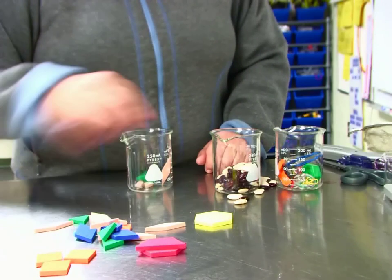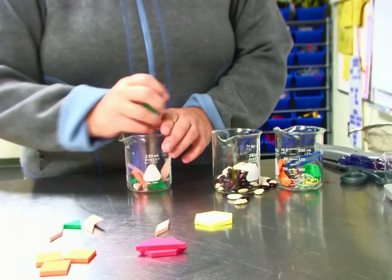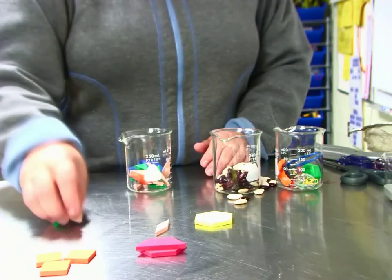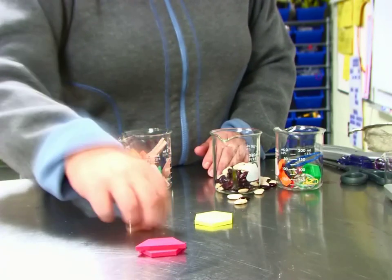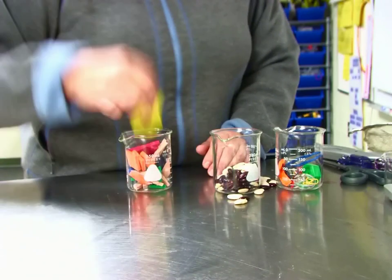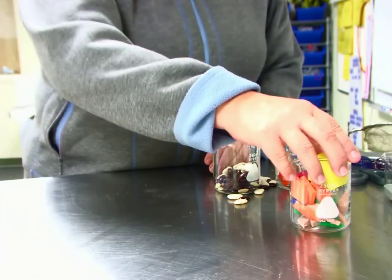So those are different ways that we can distinguish mixtures based on their physical characteristics. And we use our senses to do that. We use our sense of sight. We can also use our sense of smell if we're distinguishing things based on their smell.